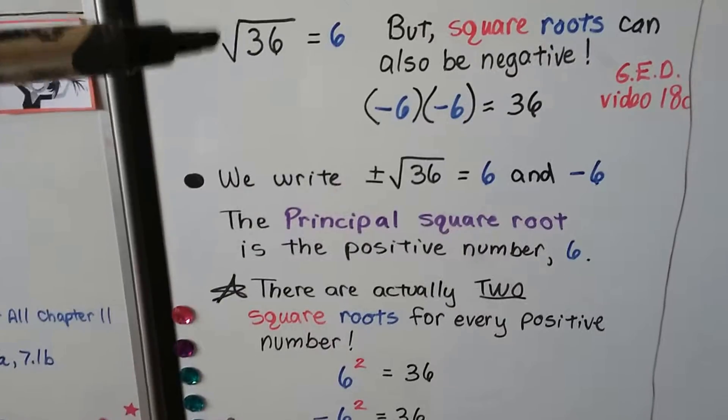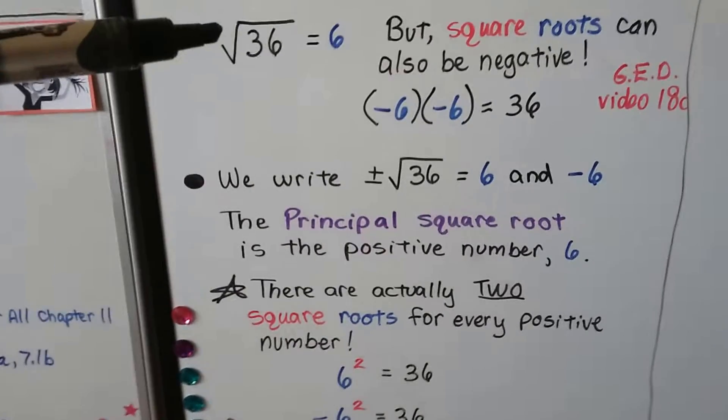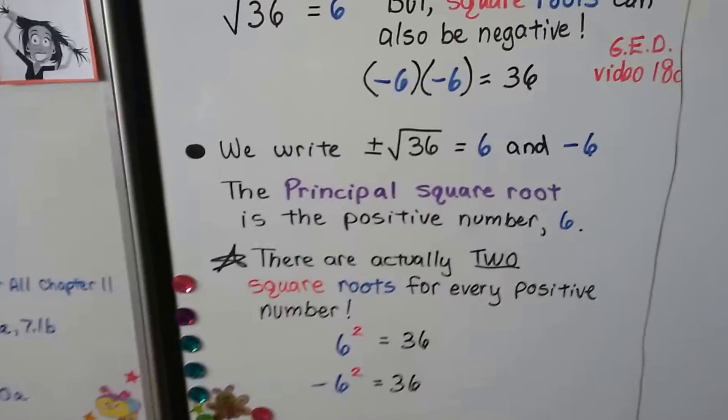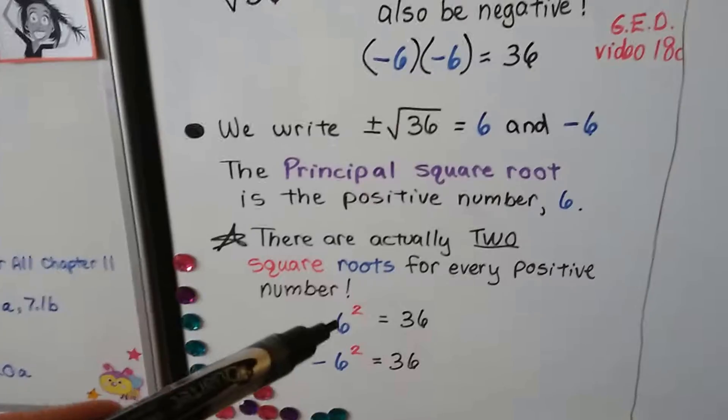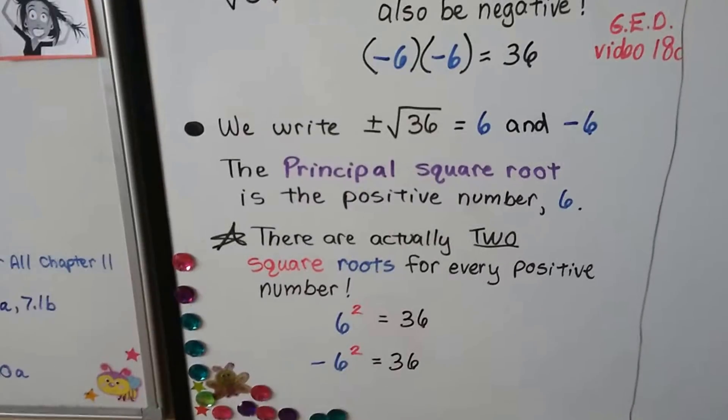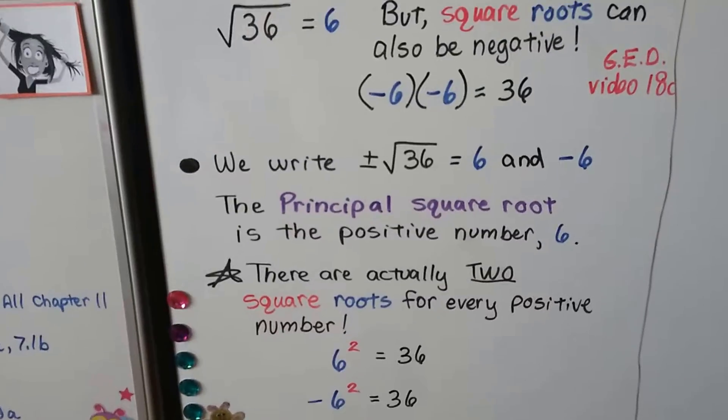This is the principal square root. It's a 6. So, there's actually two square roots for every positive number. We can have a negative and a positive because when we multiply that negative times the negative, we get a positive.